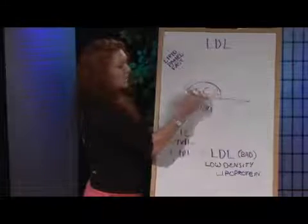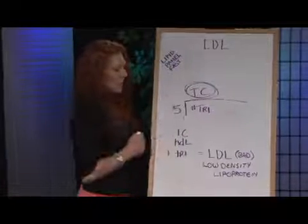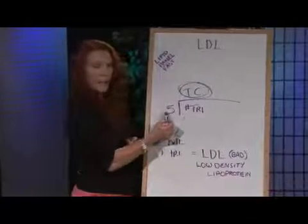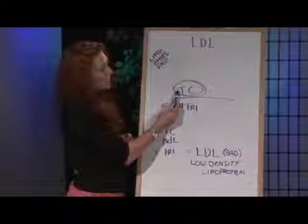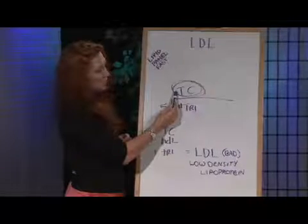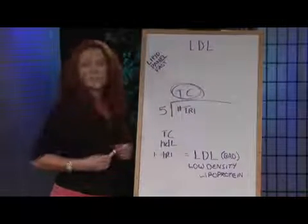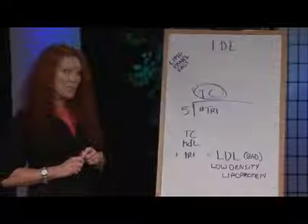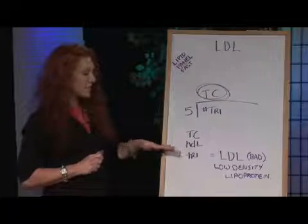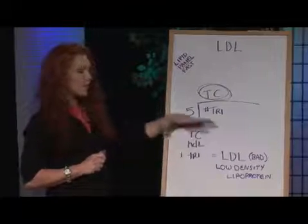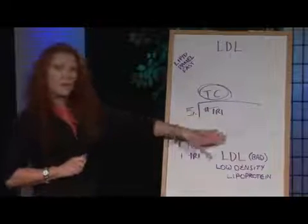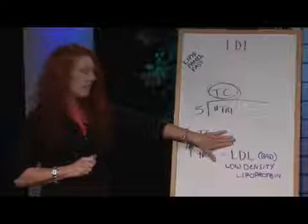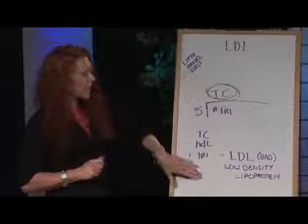What happens is, first we actually calculate the total cholesterol. We do this by dividing whatever number comes back of triglycerides by five. Once they have calculated the total cholesterol, they then actually subtract the high density lipoprotein number. Once they've subtracted that, they add the triglyceride number back in, and there it is — your low density lipoprotein number. This is exactly how it is calculated.